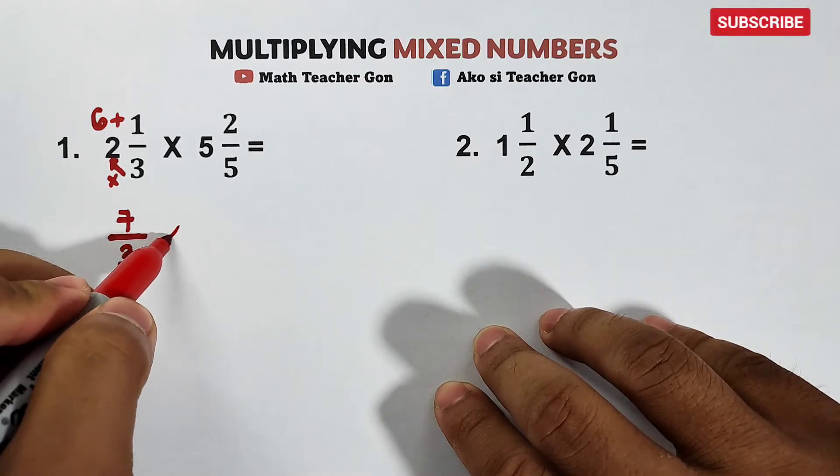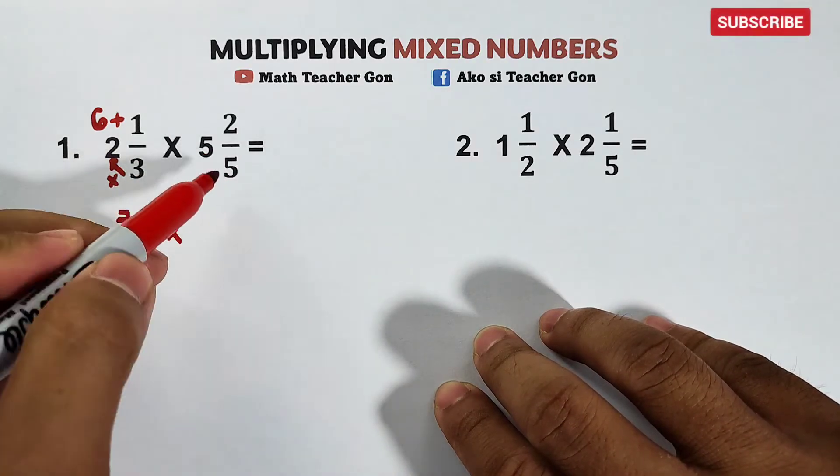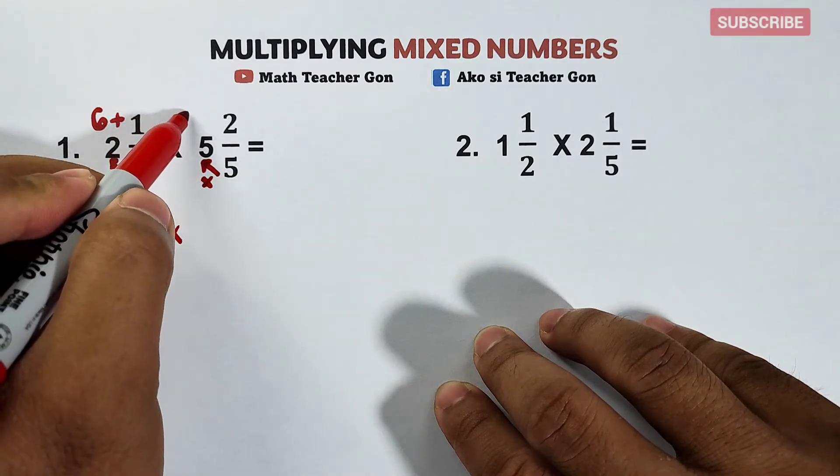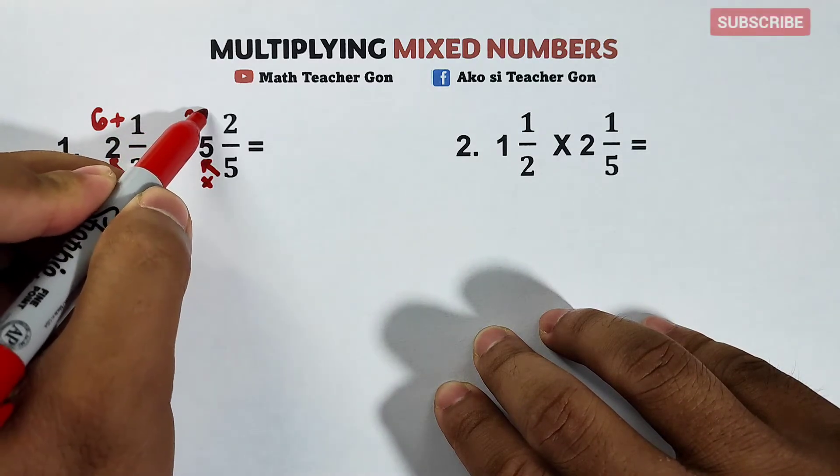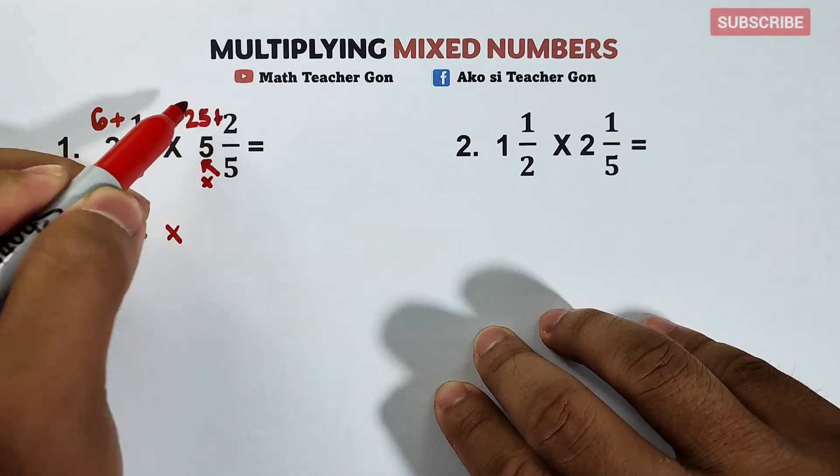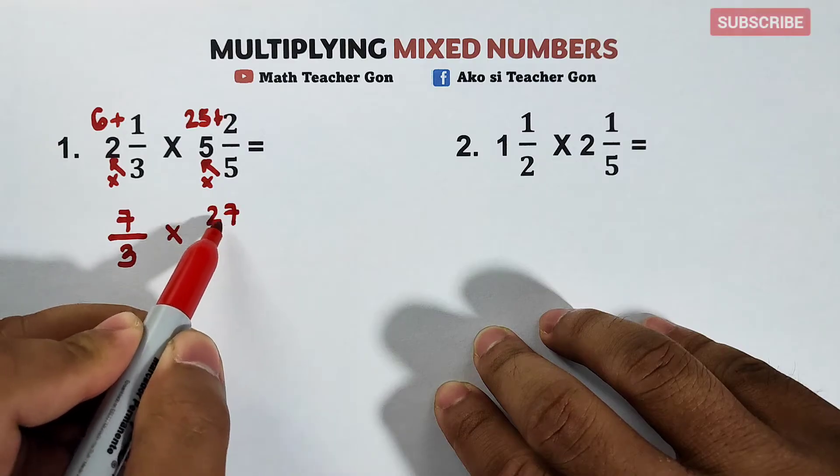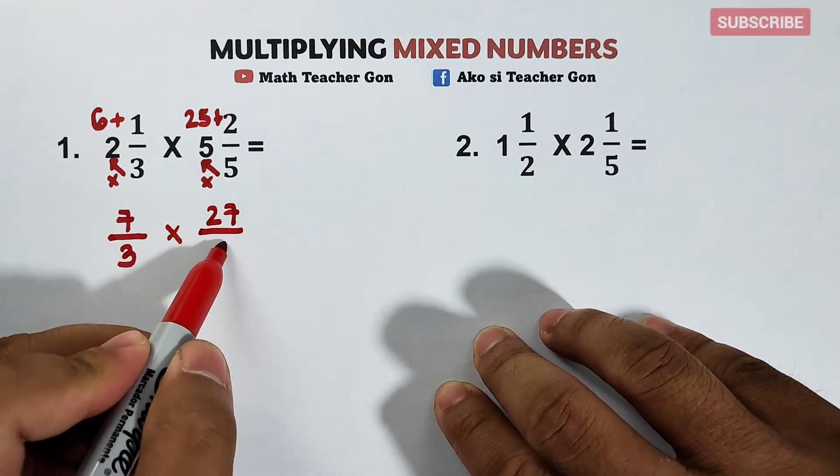Then multiply it by another mixed number. Convert this, 5 times 5 is equal to 25. Then plus 2, that is equal to 27 over 5.